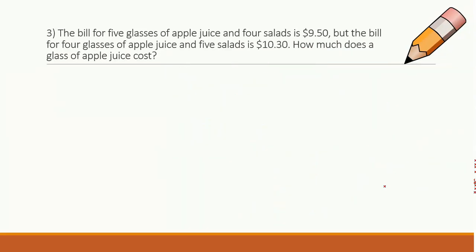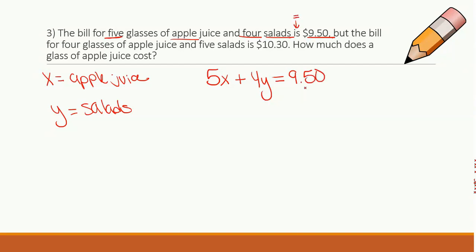I have the bill for 5 glasses of apple juice and 4 salads is $9.50, but the bill for 4 glasses of apple juice and 5 salads is $10.30. How much does a glass of apple juice cost? So it looks like I'm talking apple juice and salads. So I know that 5 apple juice, so I can write that as 5x, right? Because x is for apple juice. And 4 salads, y, equals $9.50. Because is is basically an equal sign. But the bill for 4 glasses of apple juice and 5 salads is $10.30. I have my equations written.